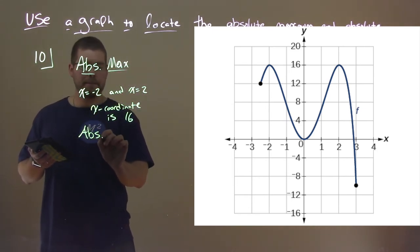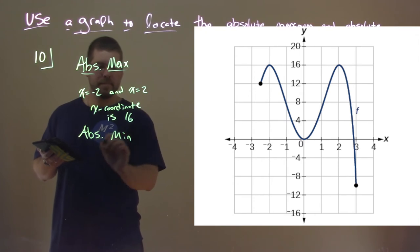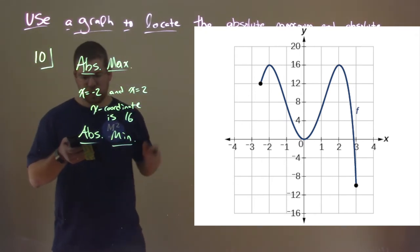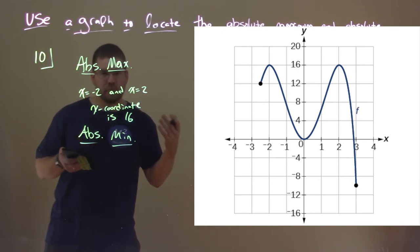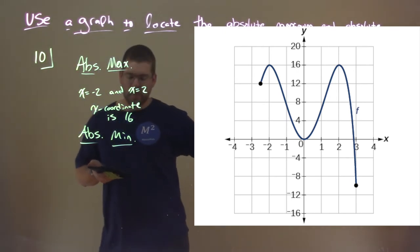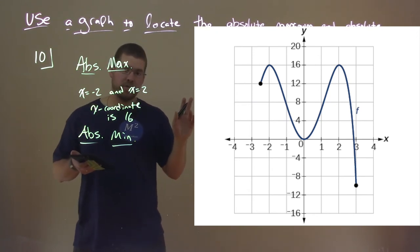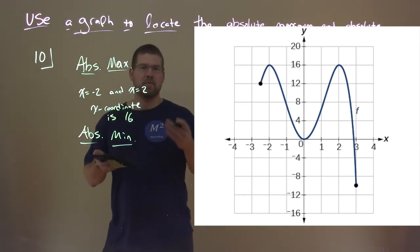What about absolute minimum? We'll find the absolute minimum. Alright. So, we look down. We see, well, a few things that catch my eye. We have the local minimum, right, at x equals 0, where it goes from decreasing to increasing.